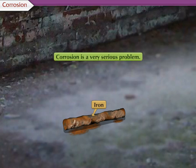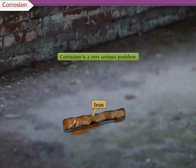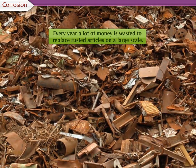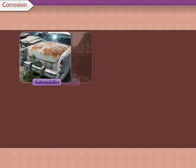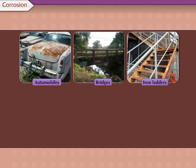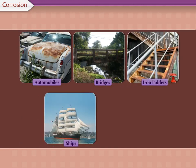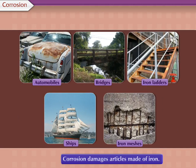Corrosion is a very serious problem. Every year, a lot of money is wasted to replace rusted articles on a large scale. Corrosion damages automobiles, bridges, iron ladders, ships, and iron meshes used in buildings and other articles made of iron.